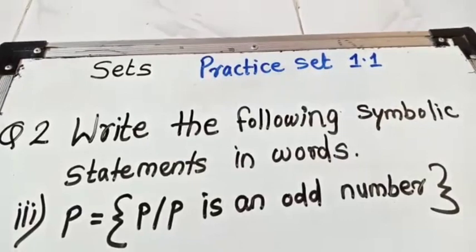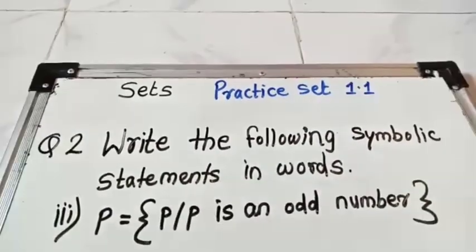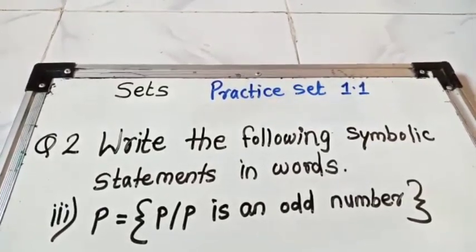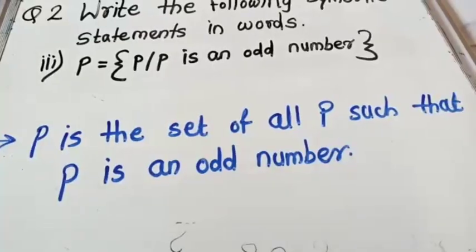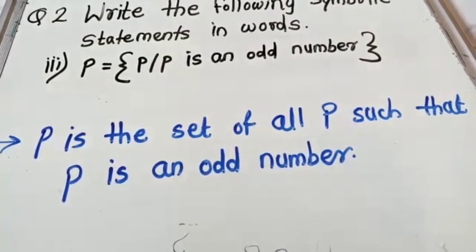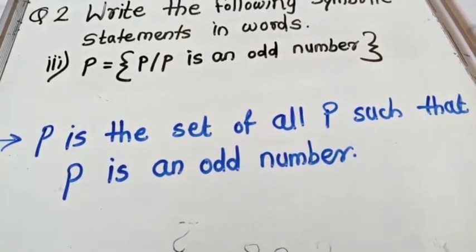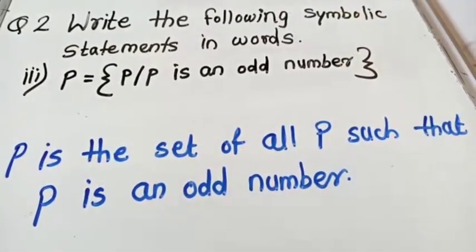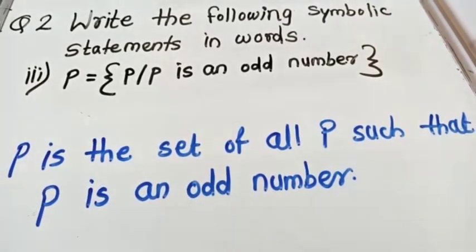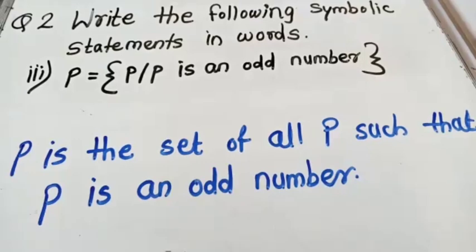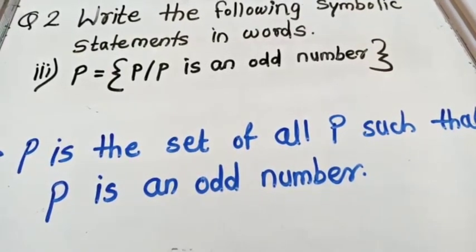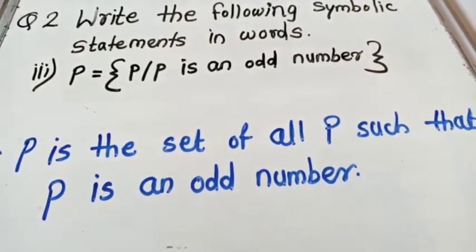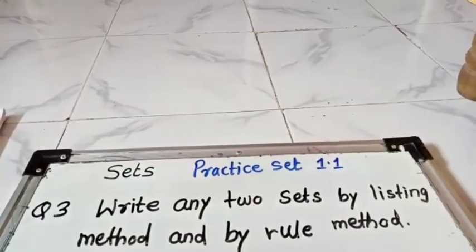Third example: P = {p | p is an odd number}. How to read it: 'P is the set of all p such that p is an odd number.' In the last two examples there was a symbol of 'belongs to,' that's why it can also be called a member or an element — so we can write in three ways. But here there is only one answer.